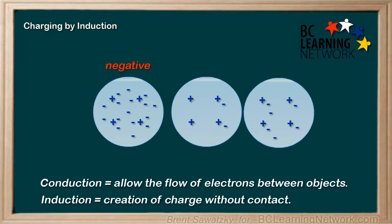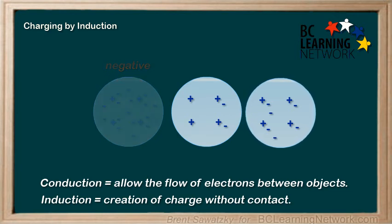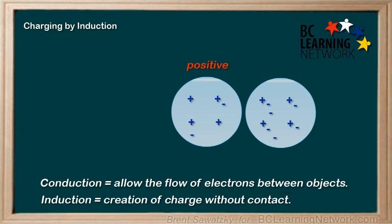And once the objects are separated and the negatively charged object is moved away, the electrons in the middle object spread out again. And now we see that there aren't enough electrons anymore — the object is now positively charged. It has a lack of electrons. And the extra electrons in the third object, the ones that jumped over from the middle object, well, that makes that one negatively charged.